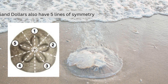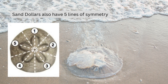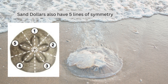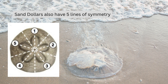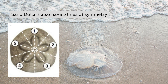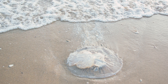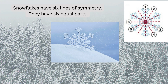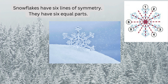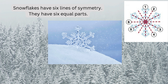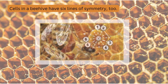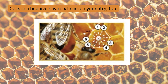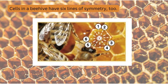Sand dollars also have five lines of symmetry. Snowflakes have six lines of symmetry and six equal parts. Cells in the beehive have six lines of symmetry too.